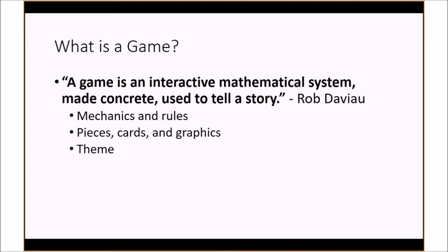I try to come up with a definition for a board game versus other types of games — we might call these tabletop games, so games played on a physical surface rather than an electronic surface. This definition came out of the book we're reading in the book club: an interactive mathematical system that you make concrete, meaning you turn those system components into things like cardboard or paper, and you try to tell a story throughout the game.